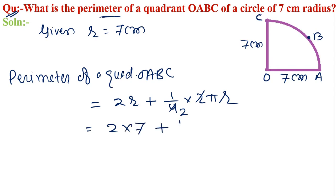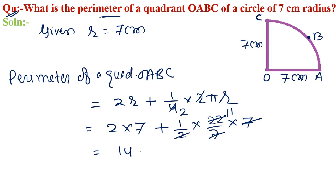So half into 22 upon 7 into 7 — here the 7s cancel and we get 11. So perimeter is equal to 14 plus 11, which is equal to 25 centimeters. This is the required perimeter of the quadrant.